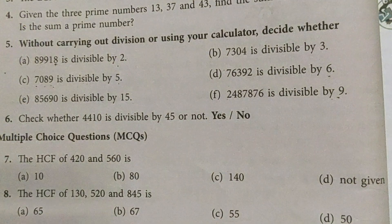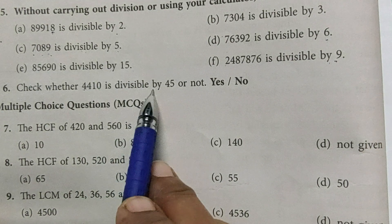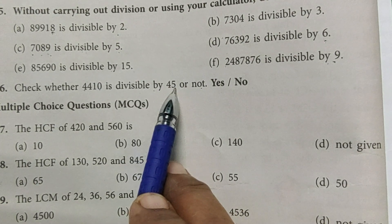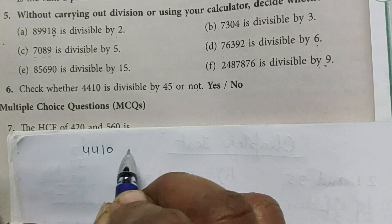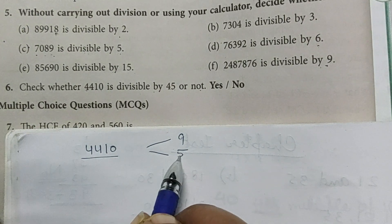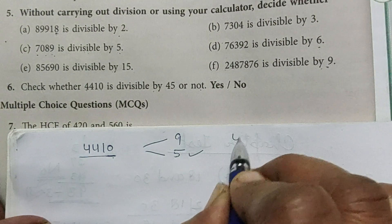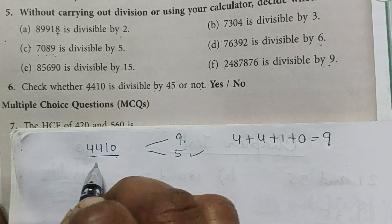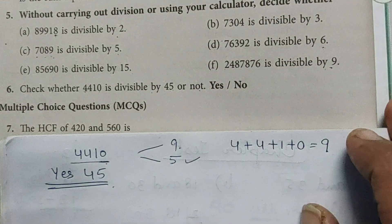Question number 6: check whether 4410 is divisible by 45 or not. We use the factor method: factors of 45 are 9 and 5. We check if 4410 is divisible by both 5 and 9. It is divisible by 5 because the unit place is 0. Adding digits: 4 + 4 + 1 + 0 = 9, which is divisible by 9. So this number is divisible by 45.